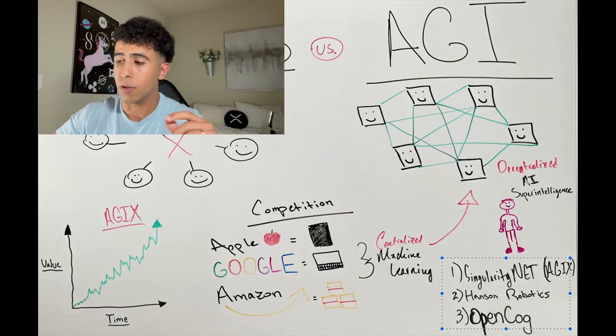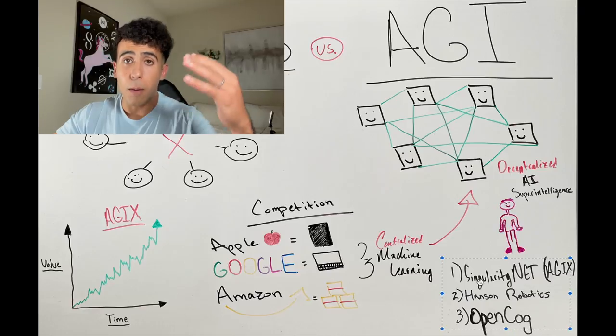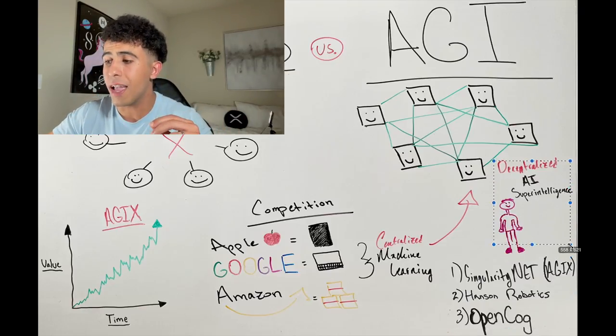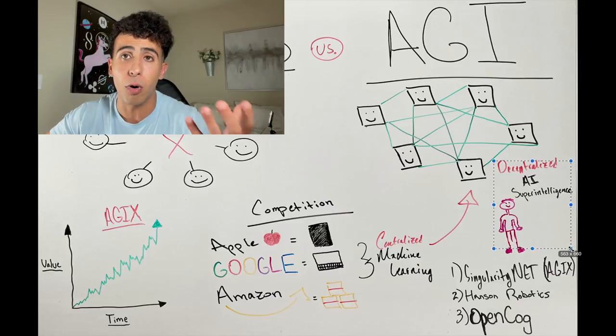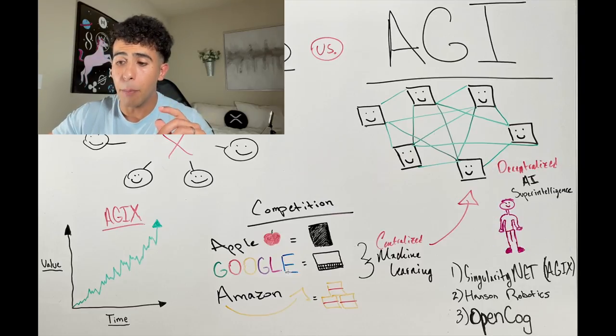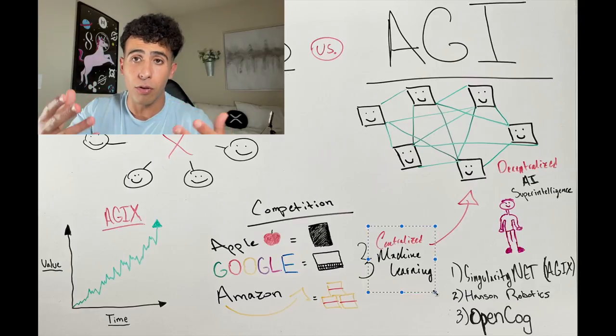OpenCog is very important. But basically, these three entities will spearhead this decentralized AI superintelligence project. Because keyword is decentralized. Here, Apple, Google, Amazon. It's all centralized machine learning algorithms that they have up until this point.